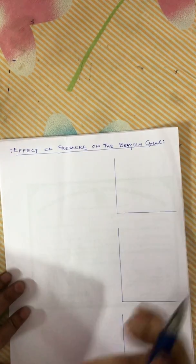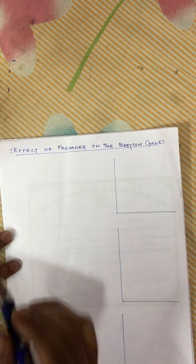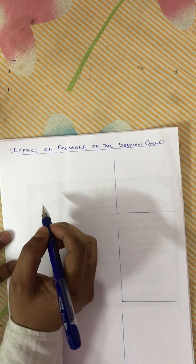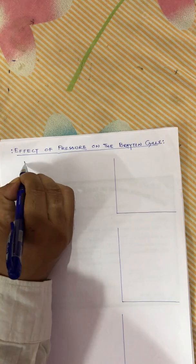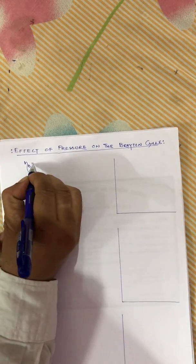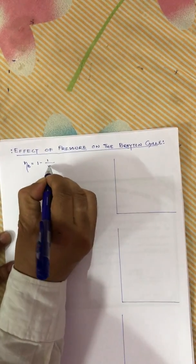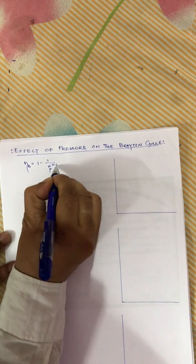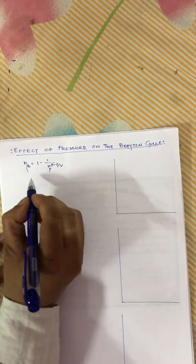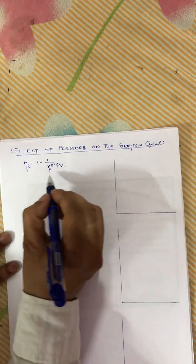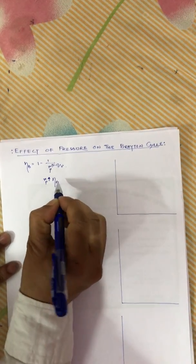The effect of the pressure ratio on the Brayton cycle: the efficiency of the Brayton cycle is a function of pressure ratio, given by eta Brayton equals 1 minus 1 divided by Rp to the power (gamma minus 1) by gamma. That is, if Rp increases, then eta Brayton will increase.